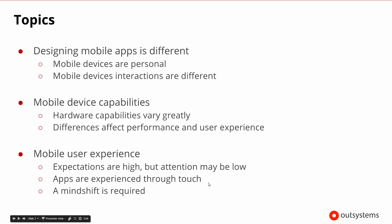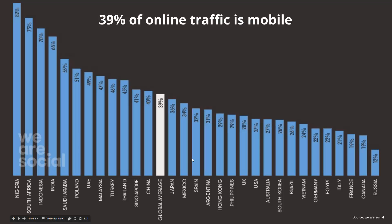Mobile users have high expectations because there are a lot of great apps out there, and they have now experienced those. So we really have to change our way of thinking to be able to create great mobile apps. Mobile app development is not your typical development, and it's important that we understand the nuances of this because now 39% of all online traffic is mobile — up from the low 30s just a year or two ago.